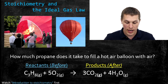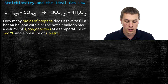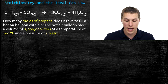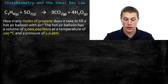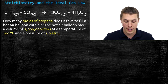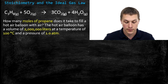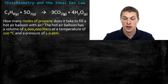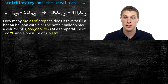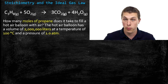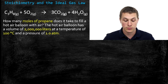That's the sort of question that if you combine stoichiometry and the ideal gas law, you can answer pretty easily. So let's take a closer look at that problem. The problem reads: how many moles of propane does it take to fill a hot air balloon? The hot air balloon has a volume of 2 million liters at a temperature of 100 degrees Celsius and a pressure of 1 atm. The temperature, pressure, and volume in liters are big clues that we'll need the ideal gas law. The question about moles of propane and the given chemical reaction hint that we'll need stoichiometry.